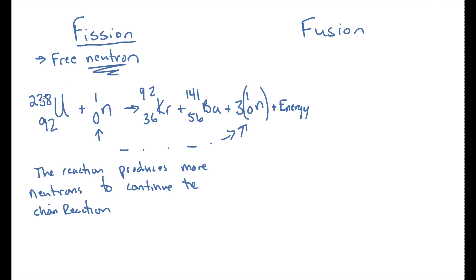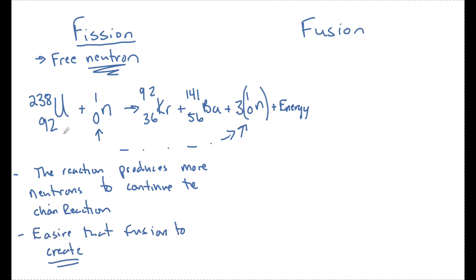For every one uranium-238 that splits, three more can get split — so you can see this is going to be an exponential chain reaction. The energy produced heats water, steam is produced, a turbine is spun, and we get mechanical energy that is now converted into electrical energy. That's how a nuclear reactor works. These reactions are easier than fusion, but you need to find uranium-238, you need a way to keep this under control so this chain reaction doesn't get out of hand like what happened at Chernobyl, and we also need to make sure we get rid of all this nuclear waste. Besides nuclear reactors, we're also seeing fission in nuclear submarines.